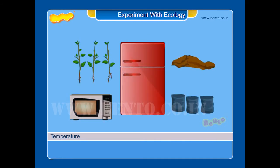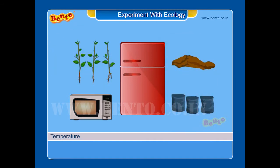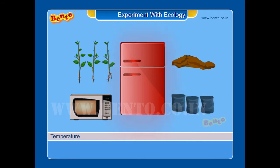Materials required: three seedlings of the same plant, moist garden soil, polythene bags, a refrigerator, and an oven.